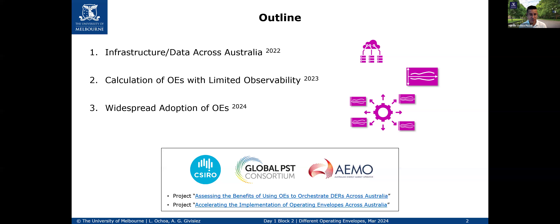For instance, use of smart meter data in Europe is extremely complex because of privacy issues. With these slides, we'll show the differences between DNSPs in terms of data availability and why we need to come up with other techniques to calculate operating envelopes. That's the second part, led by Arthur: the calculation of operating envelopes with limited observability. Finally, we'll discuss the widespread adoption of operating envelopes.